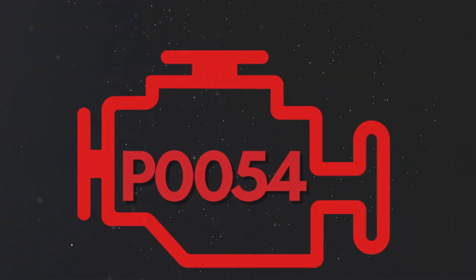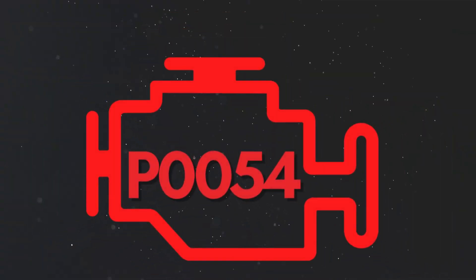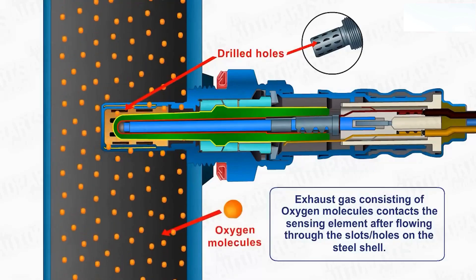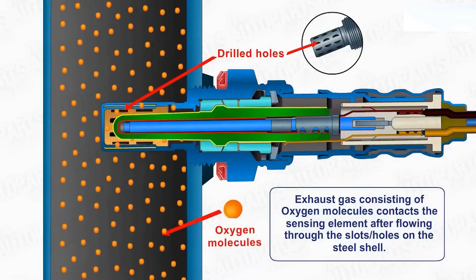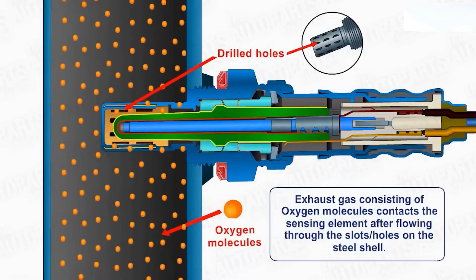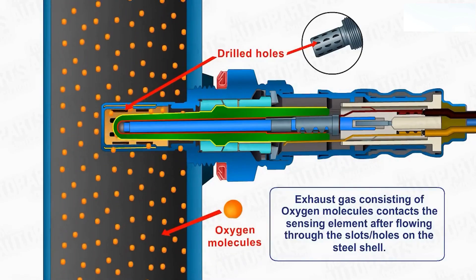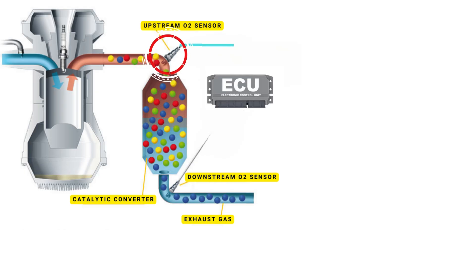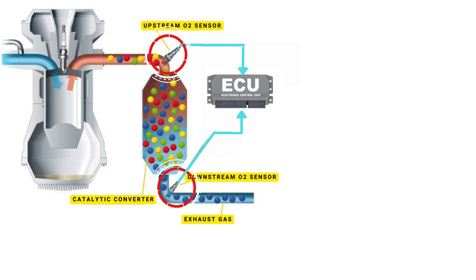Now let's learn why P0054 was triggered. Your vehicle's oxygen sensor plays a vital role in monitoring the oxygen content in the exhaust gases. It sends this data to the ECU, which then uses it to maintain the optimal air-fuel ratio.